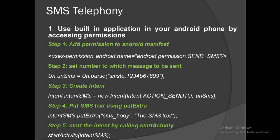Step four: put SMS text using putExtra into the intent — intent_sms.putExtra("sms_body", sms_text) — passing whatever message you want to send. Step five: start the intent by calling startActivity and passing the intent_sms object. This will call your built-in messaging app for sending the SMS.